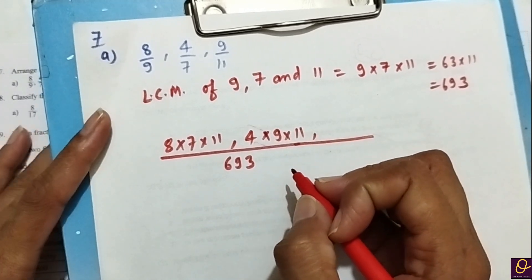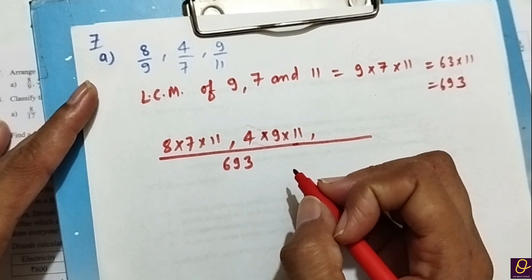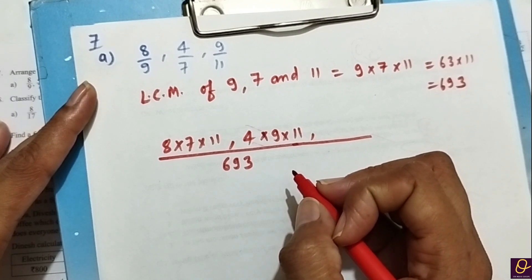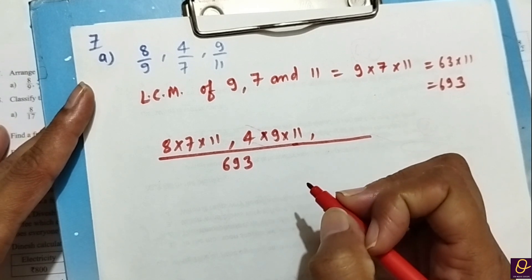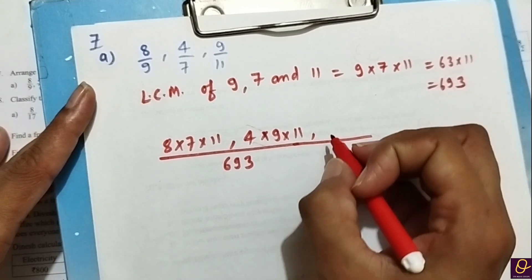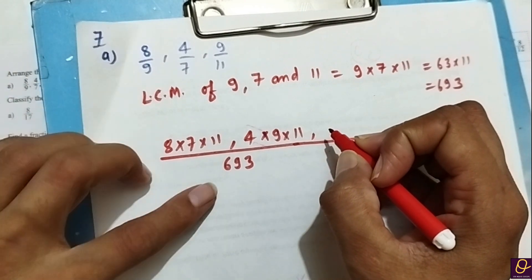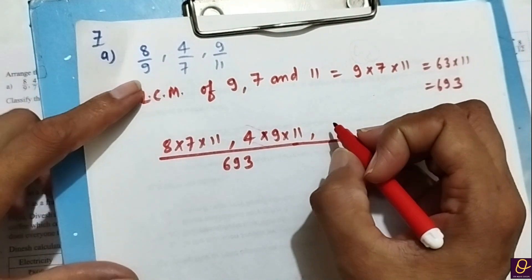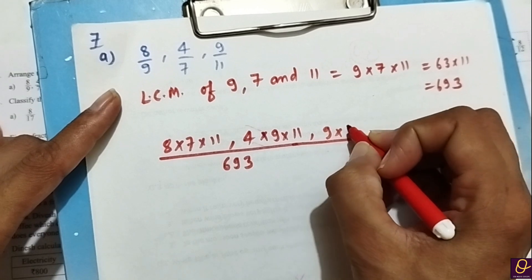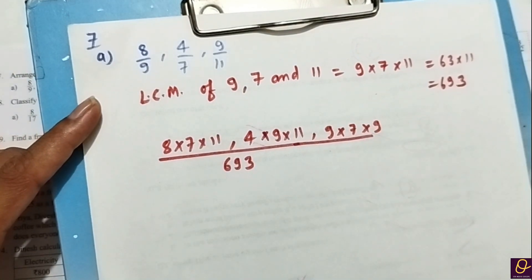Saare different matlab koi bhi common number nahi hoga — prime numbers hone chahiye. Ab 11 se divide kiya toh hamare paas 9 × 7 = 63 aayega. Ab inko multiply karke note kar lete hain.